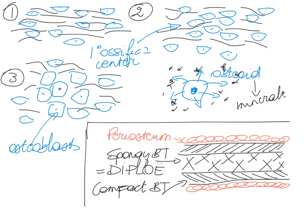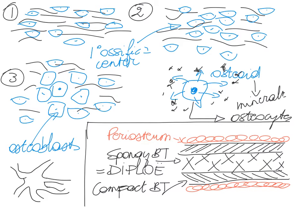When these osteoblasts get surrounded by hardened bone matrix — in other words, when the minerals have invaded into the osteoid — these osteoblasts are going to be triggered to become osteocytes. When they become surrounded by the hardened matrix, they become osteocytes. Osteocytes are more branchy looking cells, and these branches are eventually going to merge with canaliculi, and these osteocytes sit in a lacuna.